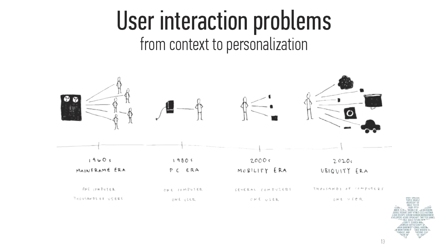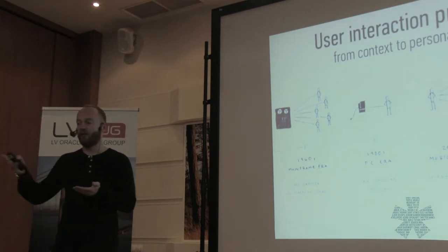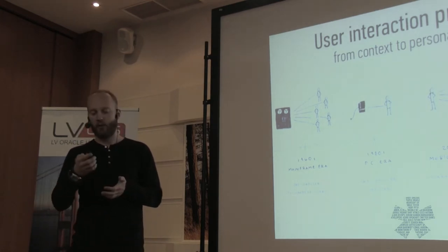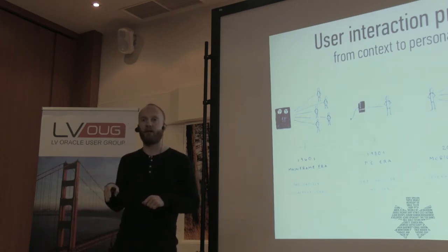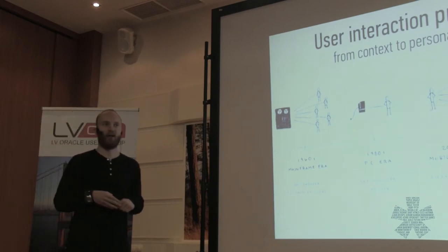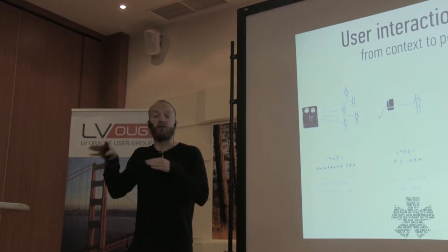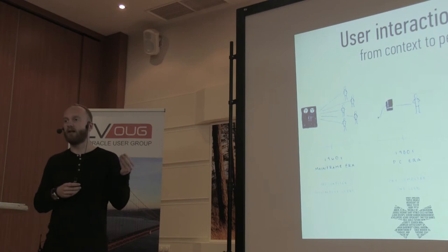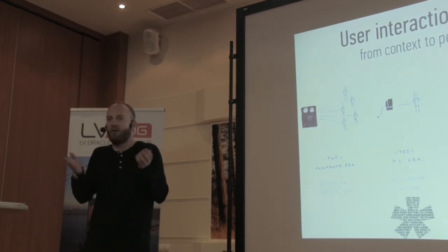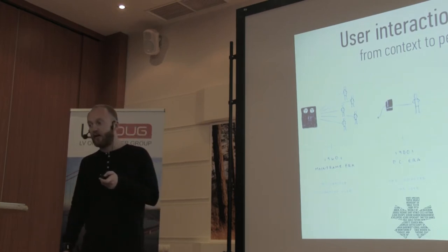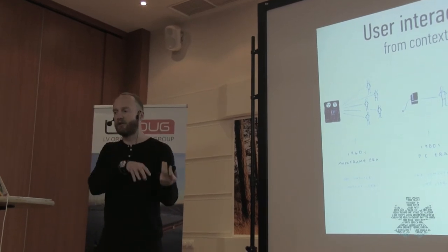Right now we have different devices with different input types. On mobile phones we have touchscreens, on desktop we have a mouse, on smart TV we have a D-pad controller. And Blackberry devices are pretty weird because they can have three different user interaction types — physical keyboard, touchscreen, and a trackpad you can use like a mouse.